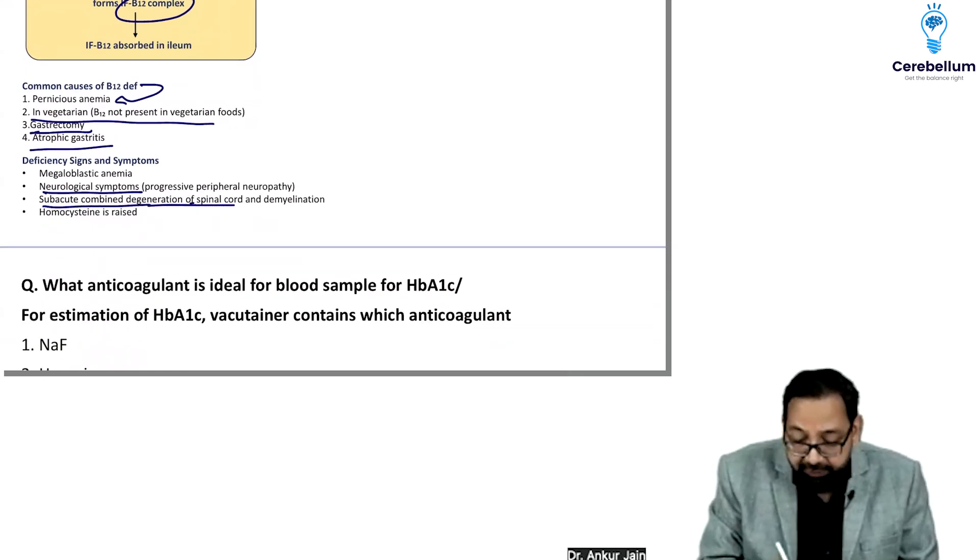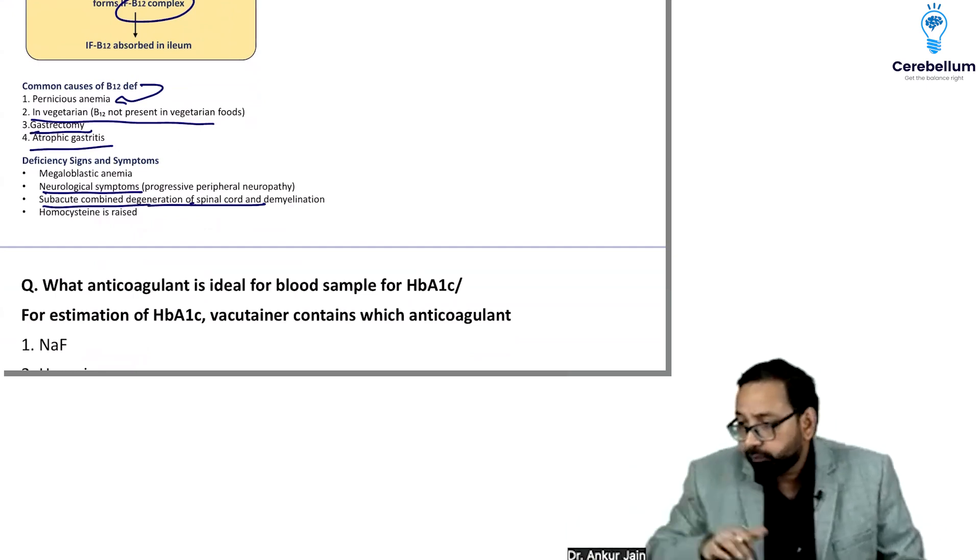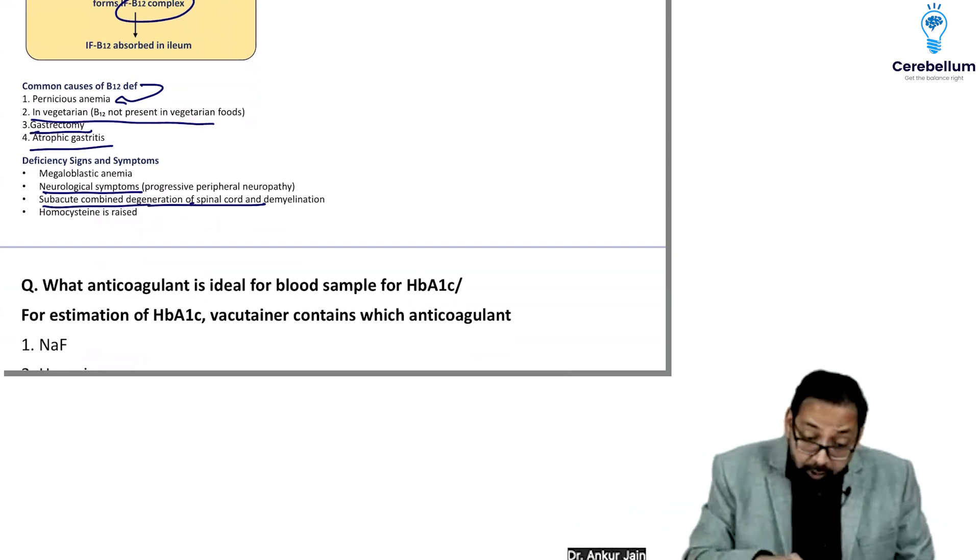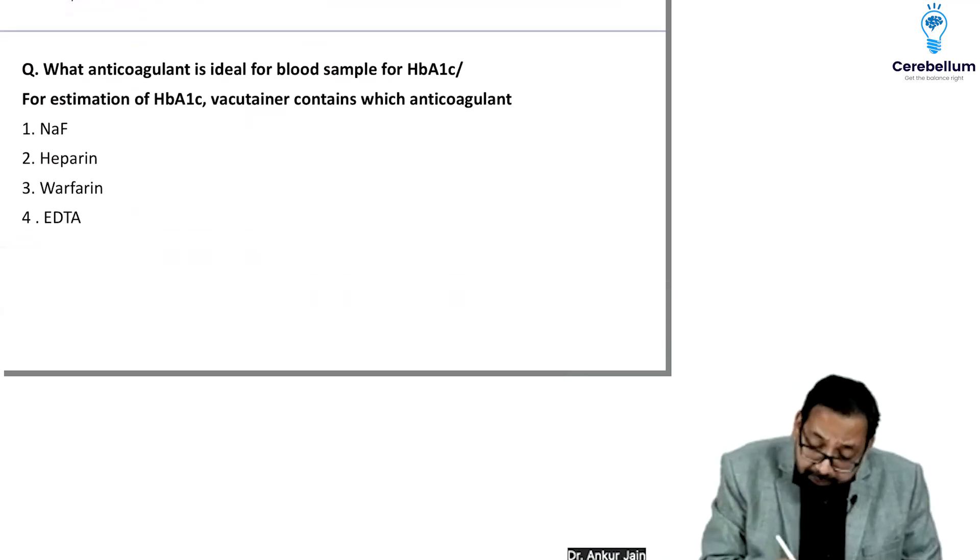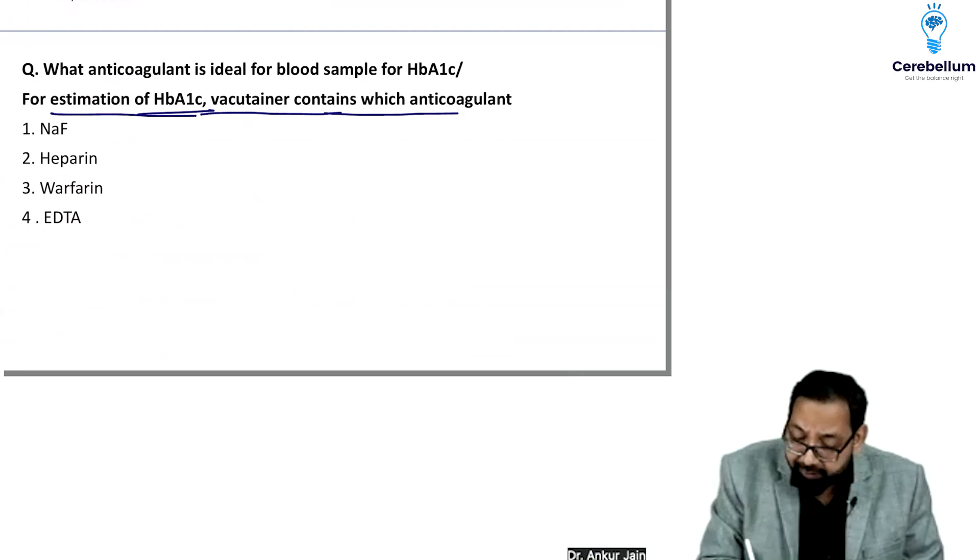Common causes of B12 deficiency: pernicious anemia, gastectomy, atrophic gastritis. Neurological symptoms include subacute combined degeneration of spinal cord and demyelination. Next question: answer is estimation of HbA1c with EDTA.